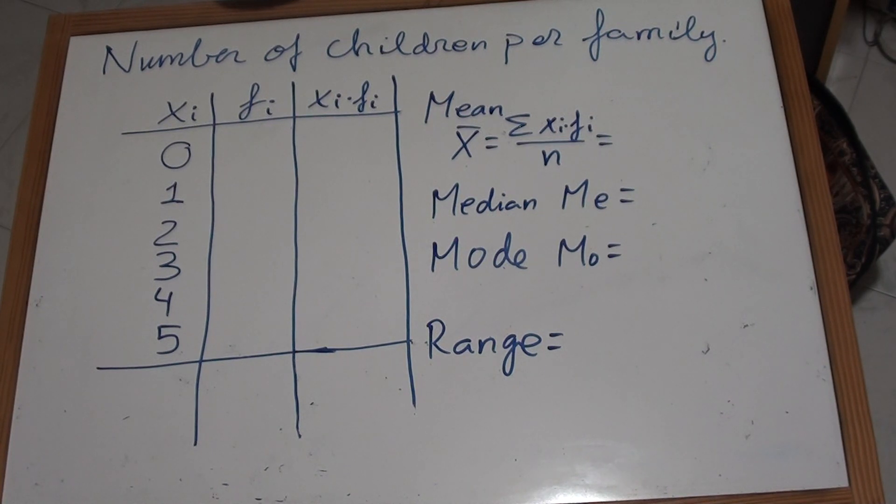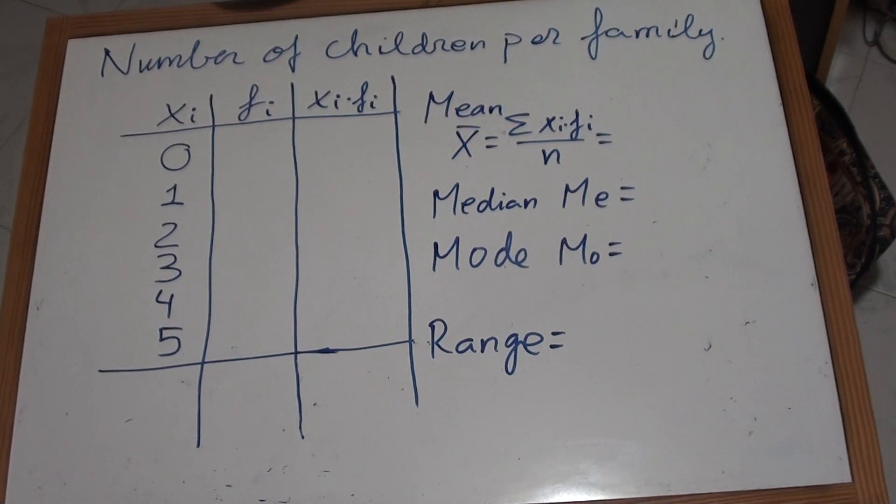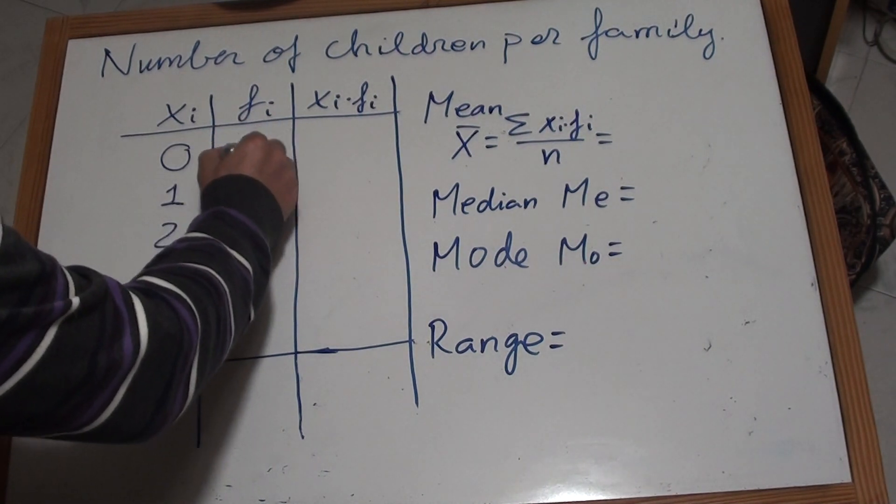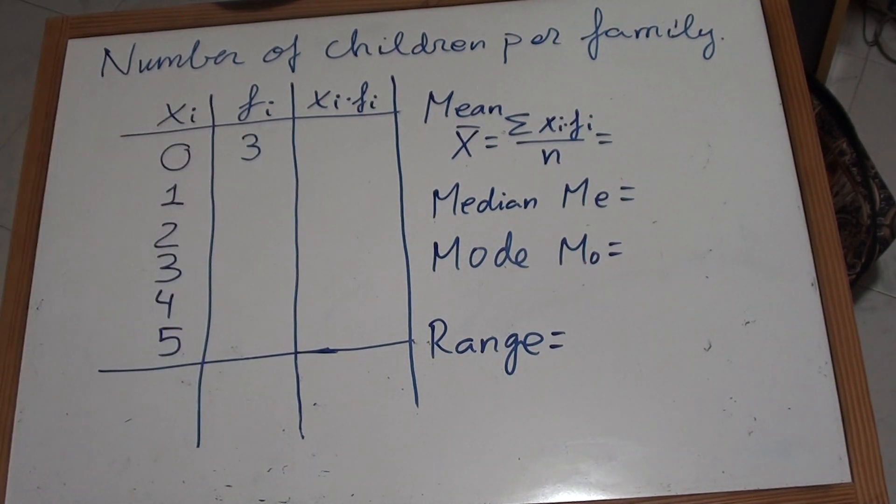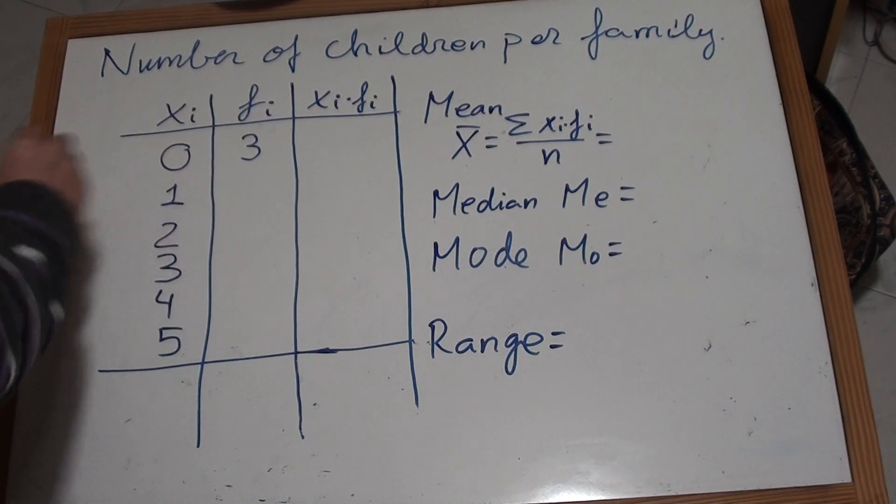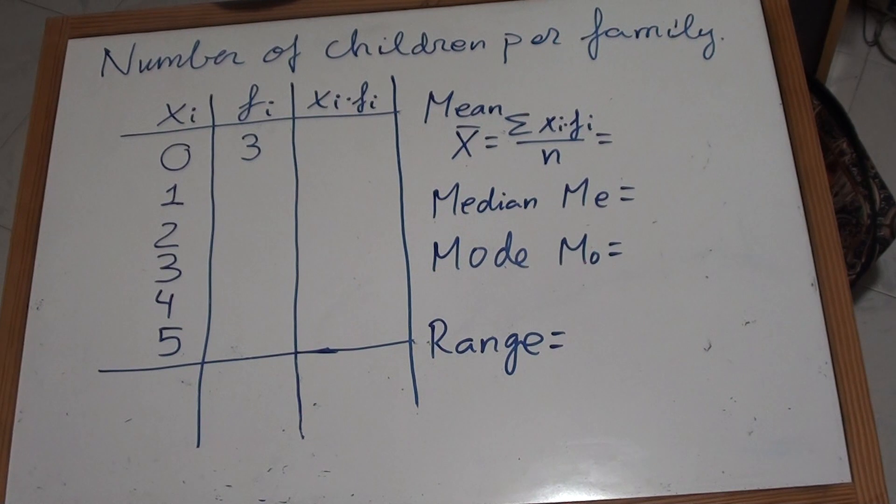So first of all, the frequencies come from the collection of data. So imagine we ask a number of families and we find out that there are 3 families - that is the frequency, the frequency with which we find this data. So there are 3 families with no children.